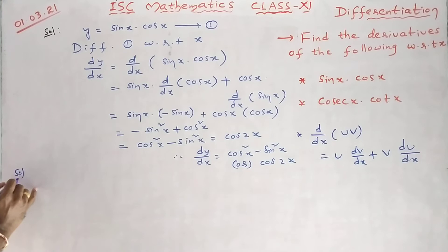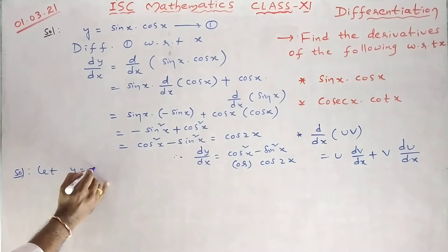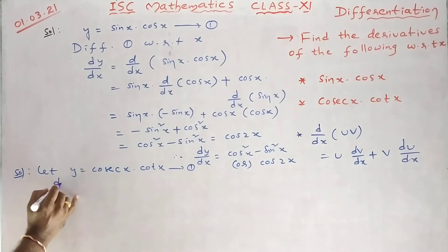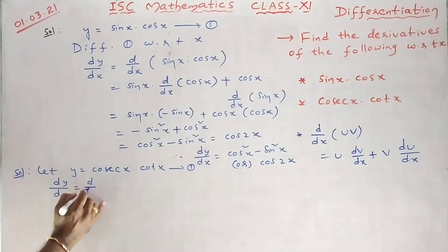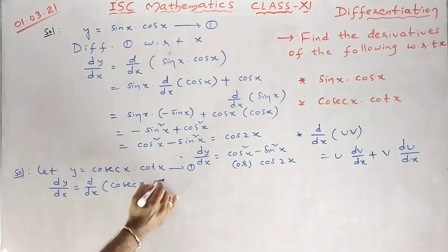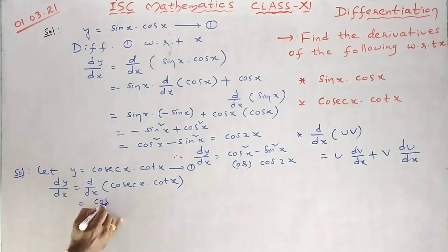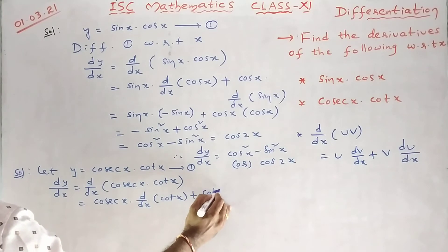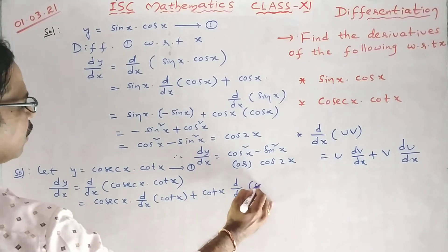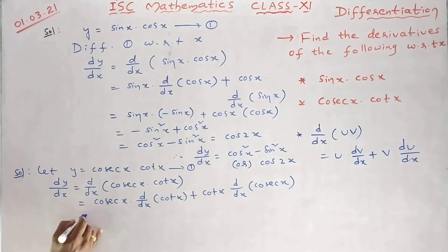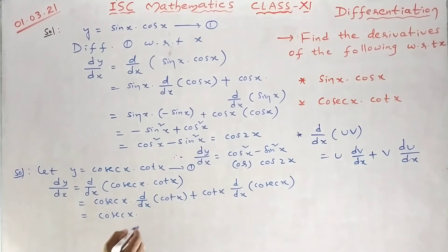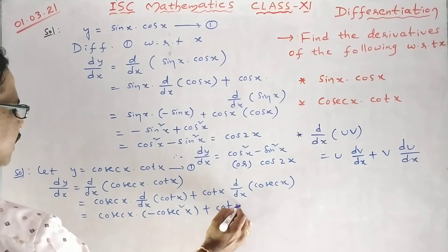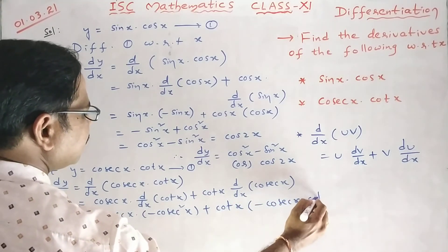Next one: let y be equal to cosec x into cot x. This is also product rule. dy/dx equal to d/dx of cosec x into cot x. So first function, cosec x, into derivative of cot x, plus cot x into derivative of cosec x. The derivative of cot x is minus cosec squared x, plus cot x into derivative of cosec x, which is minus cosec x into cot x.